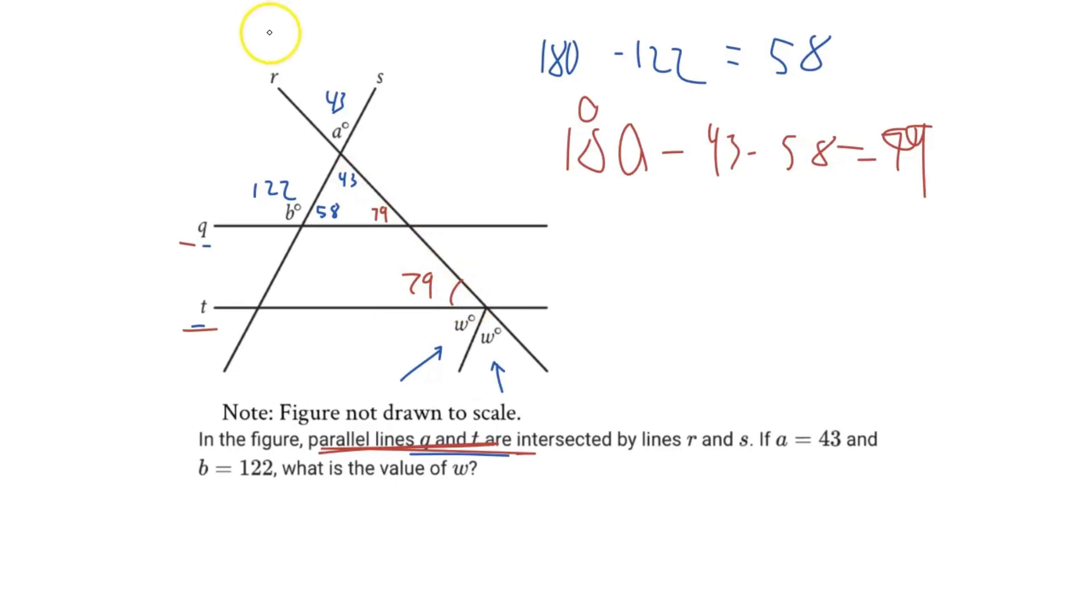And so now we have a similar relationship with the 180 degrees on a straight line. You can see this big angle right here, which consists of the 79 degrees, but also consists of our two w's. I'm going to assume that this is split evenly because it's w degrees on both sides. Therefore, we can write this relationship as 2w plus 79 equals 180 degrees.